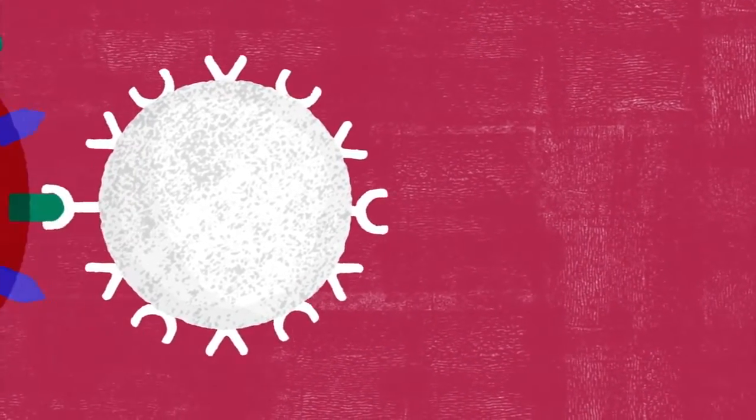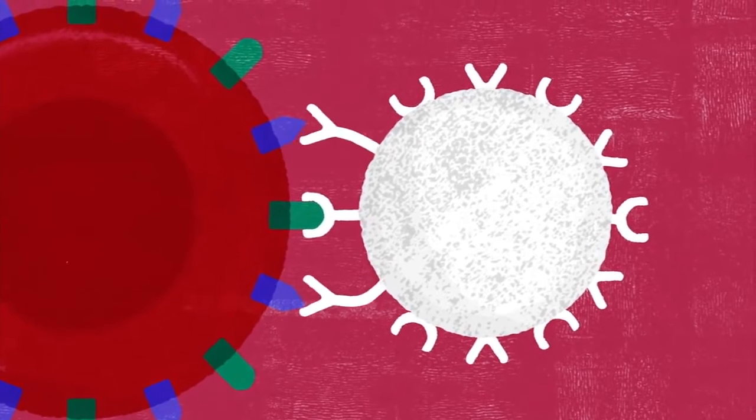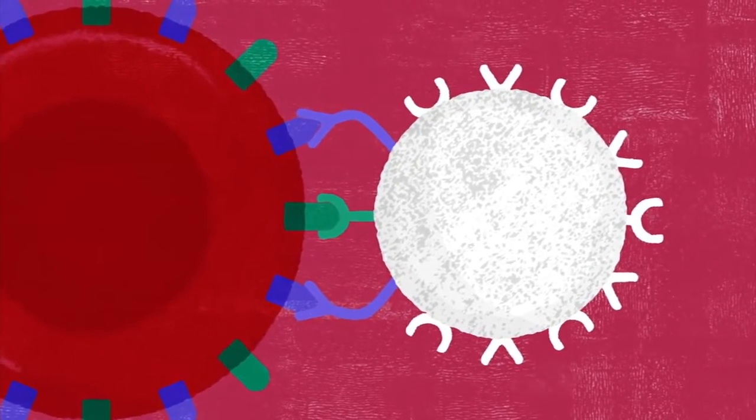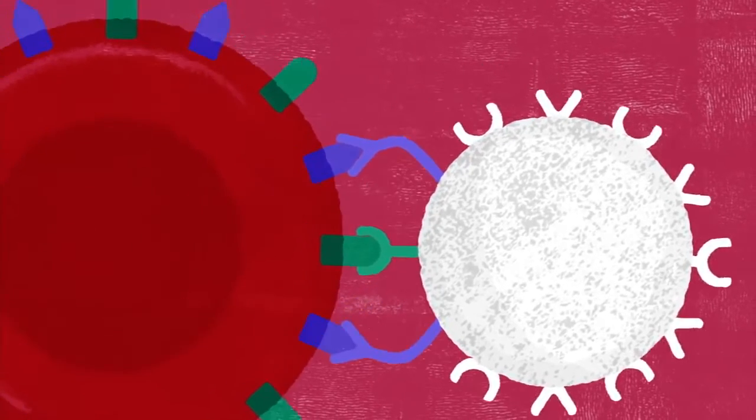Antigens serve as identifying markers, allowing the immune system to recognize your body's own cells without attacking them as foreign bodies. The two main kinds of antigens, A and B, determine your blood type.